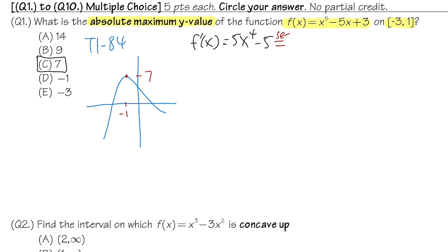If you want to do it without the calculator, first take the derivative: 5x⁴ − 5, set equal to zero to find the critical numbers. Solving: x⁴ = 1, so x = ±1.